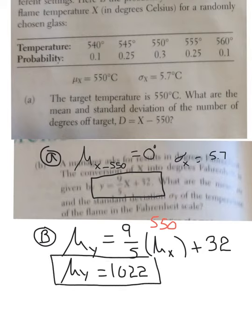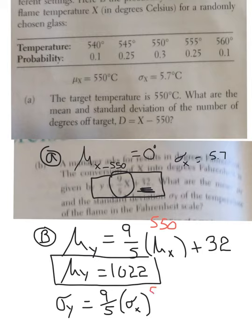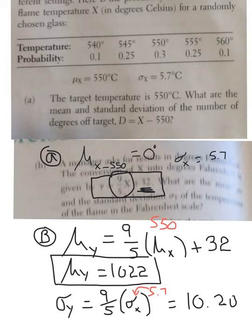Now for the standard deviation: the new standard deviation is going to use the same process — we only multiply, we don't add or subtract. So it's going to be (9/5) times the old standard deviation. The old standard deviation was 5.7, so we multiply 9/5 times 5.7, and the answer is 10.26.